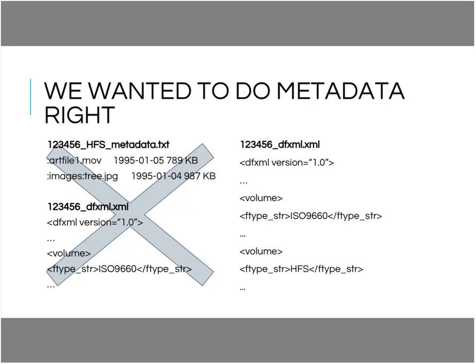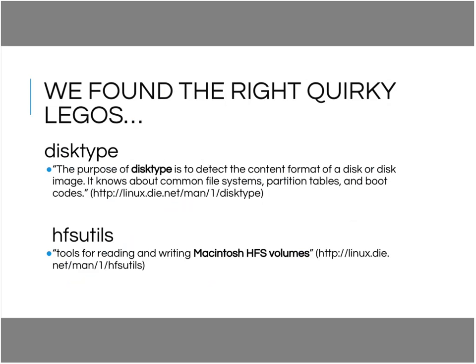We wanted to do metadata right — we wanted uniformity across all our metadata. We picked DFXML because it's a standard, and it gave us the ability to express the layout and structure of all disk images, including multiple file system representations. For example, a disk image of an artwork might represent a CD you could put into a Mac or a PC, with multiple file system compatibilities. We wanted to express that all in one metadata file rather than fragmenting it into separate structures. The question was: where do you go from here? I thought back to my approach to Linux — this is a set of tools I can add to and connect to make what I need.